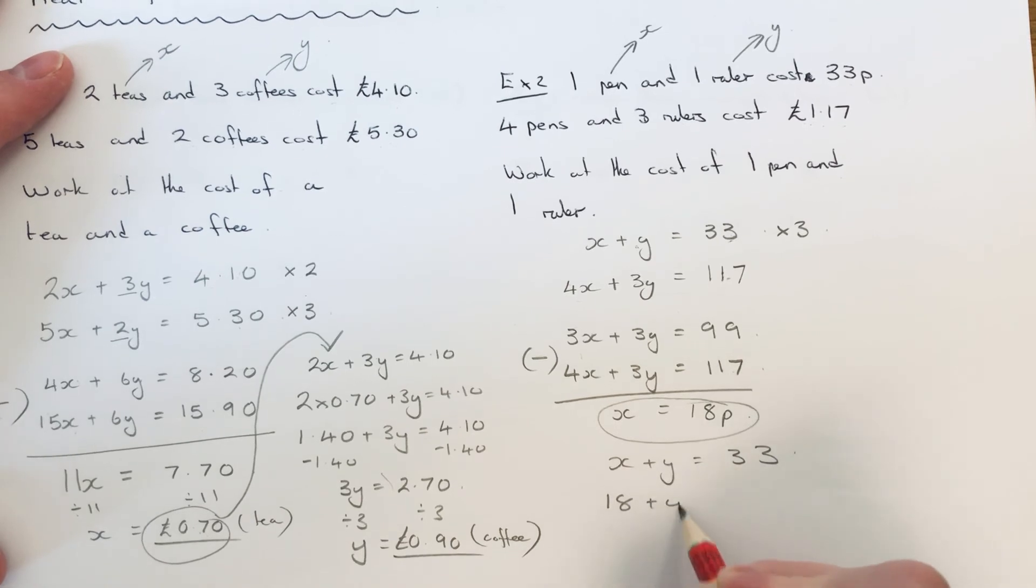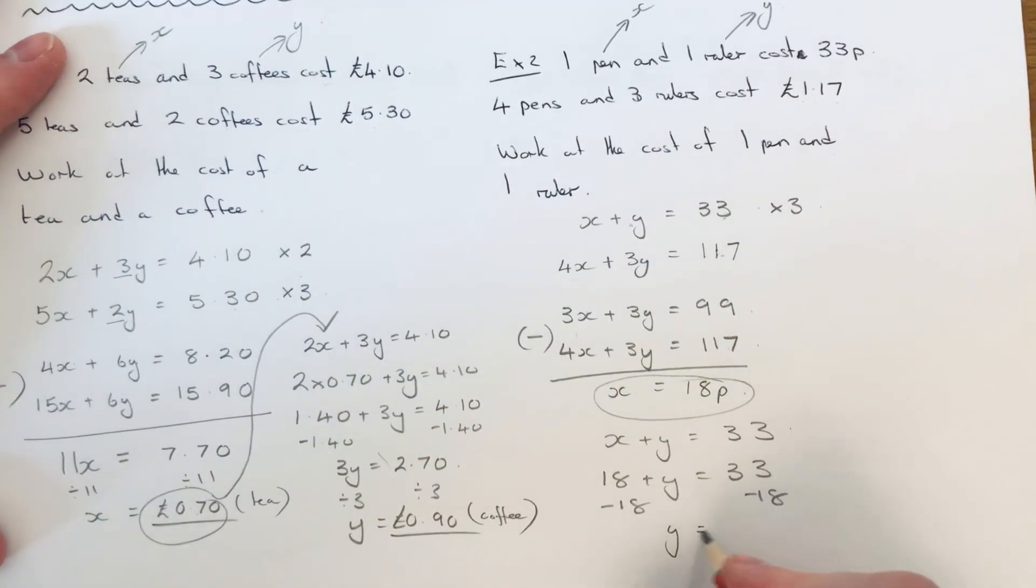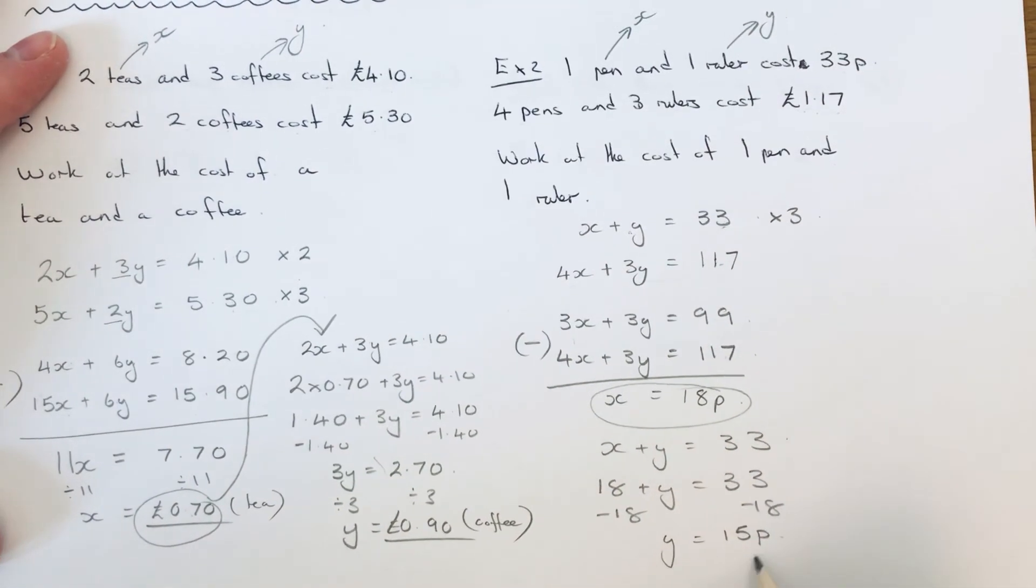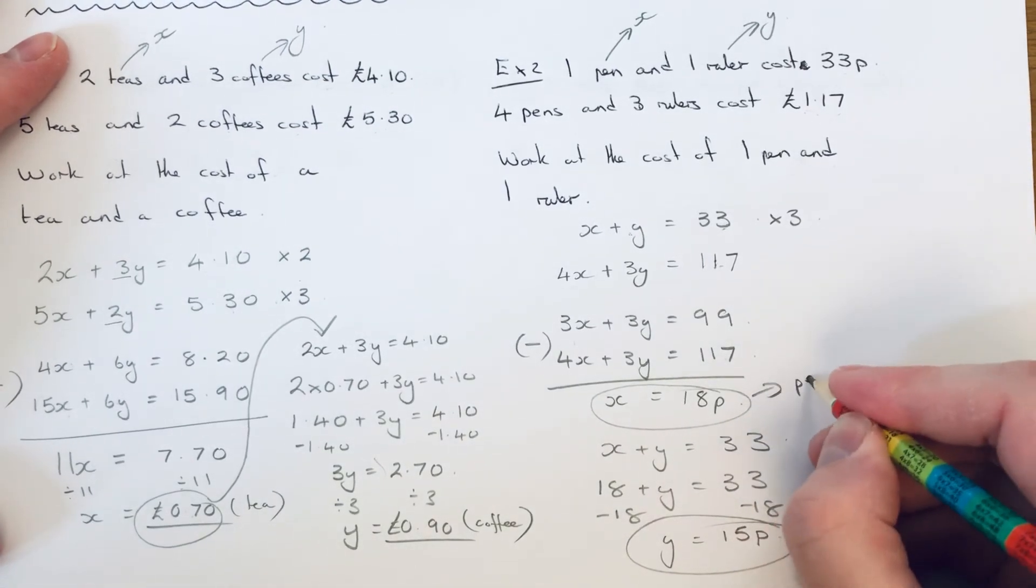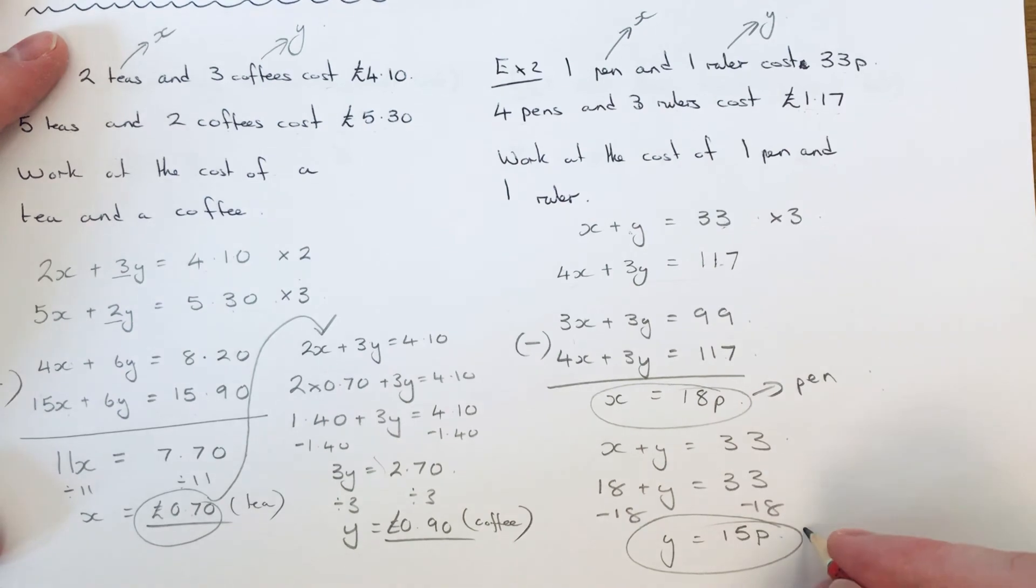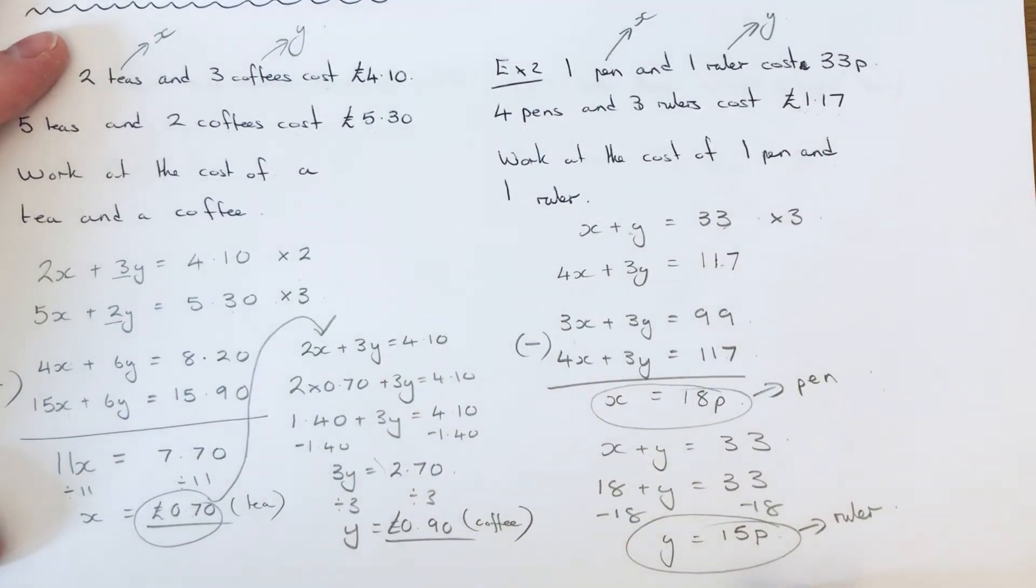So x is 18p. So it's 18 plus y equals 33. So if we take 18 off both sides, 33 take away 18 is 15. So we'll get an answer of 15p. So that's the cost of our pen which is 18p. And the ruler is 15p.